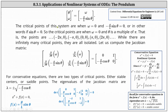Next, we determine the critical points of the system, which is where theta prime and omega prime are both equal to zero. Notice theta prime is equal to zero when omega equals zero, and omega prime is equal to zero when negative g divided by l sine theta equals zero, or in other words, when sine theta equals zero. This indicates the critical points are where omega equals zero and theta is a multiple of pi, since the sine of a multiple of pi is zero.